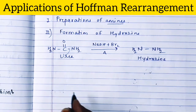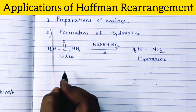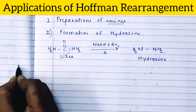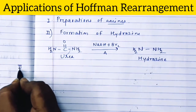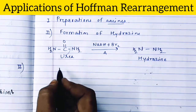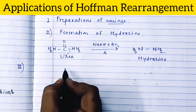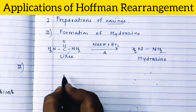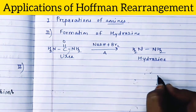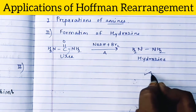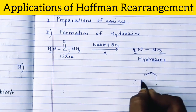Hydrazine is a useful reducing agent, so the formation of hydrazine is the best application of Hofmann rearrangement. Now we'll see another example: the formation of beta-aminopyridine.